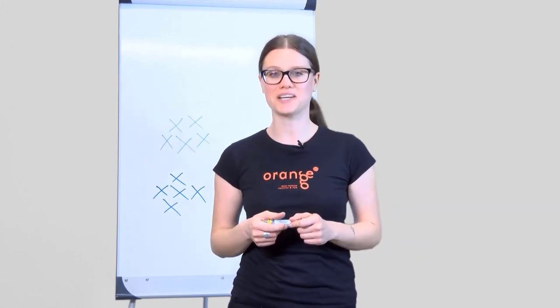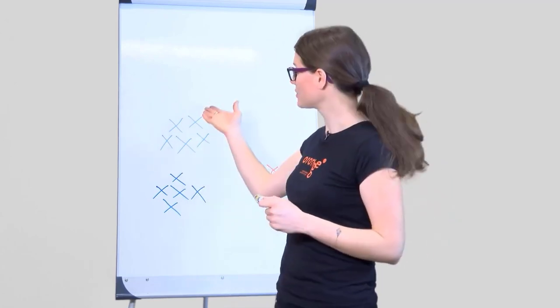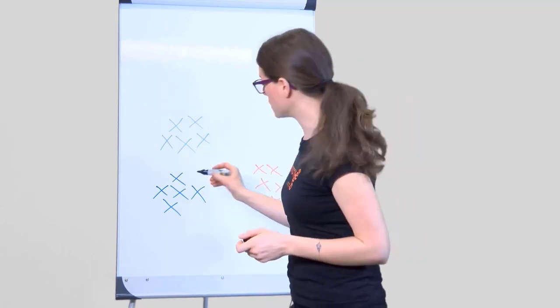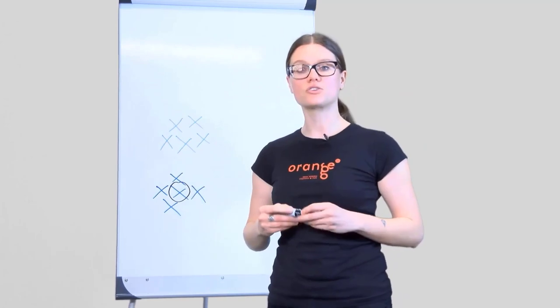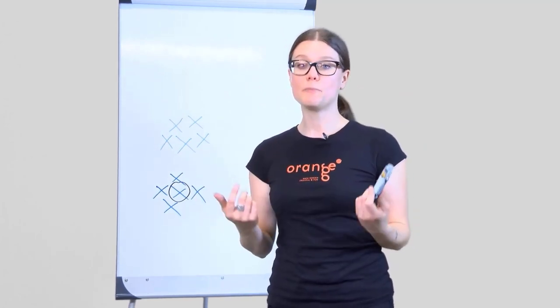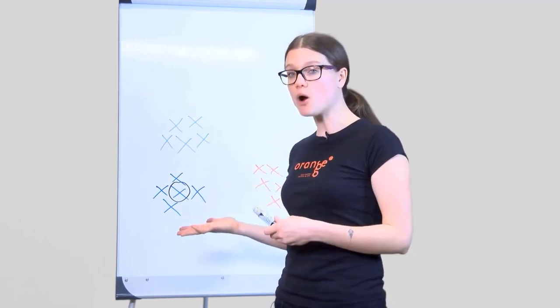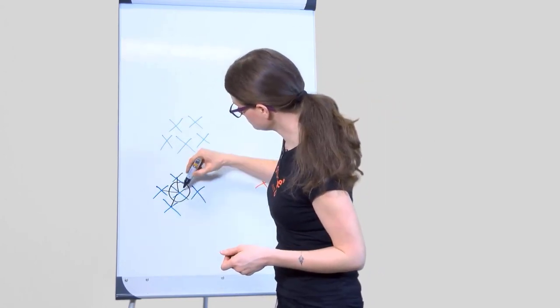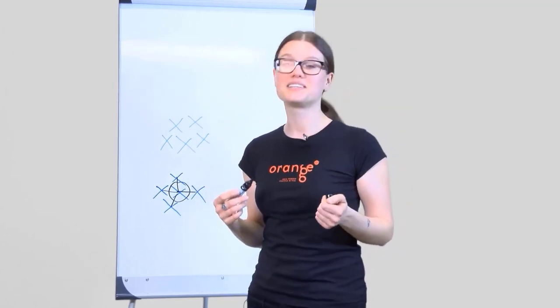We talked about K-Means and how to find a good number of clusters in our data. We mentioned Silhouette, which is a score of cluster quality and helps us find the K to our means. Here we have three clusters: green, blue and orange. Now we would like to know how well this data point belongs to the blue cluster. First, we will measure the average distance between our data point and the points in its own blue cluster. Let's call this distance A.